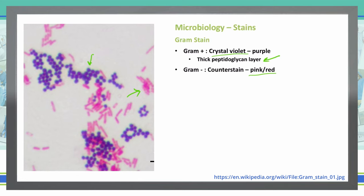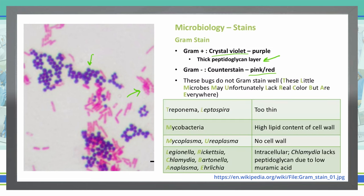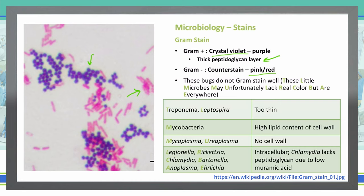Some bacteria won't stain well for gram positive or gram negative. Treponema and Leptospira are too thin — the cell wall is too thin to be stained with the gram stain. Mycobacteria has a very high lipid content in the cell wall, which makes it resistant to staining. Mycoplasma and Ureaplasma don't have a cell wall, so we can't stain them.